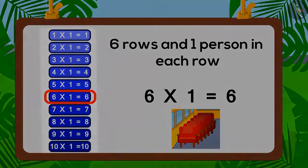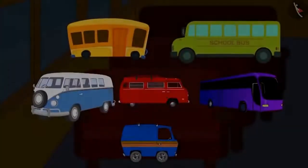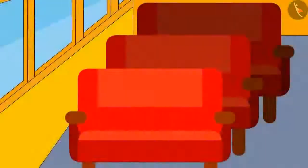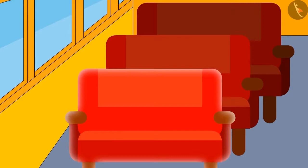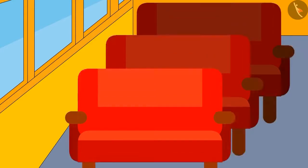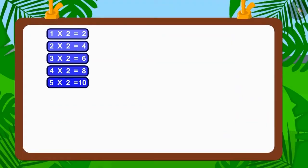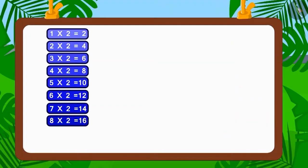So children, can you find out more such buses where six people can sit? But remember that the number of people in each row should be equal. Let's find all the factors of six and solve this puzzle.